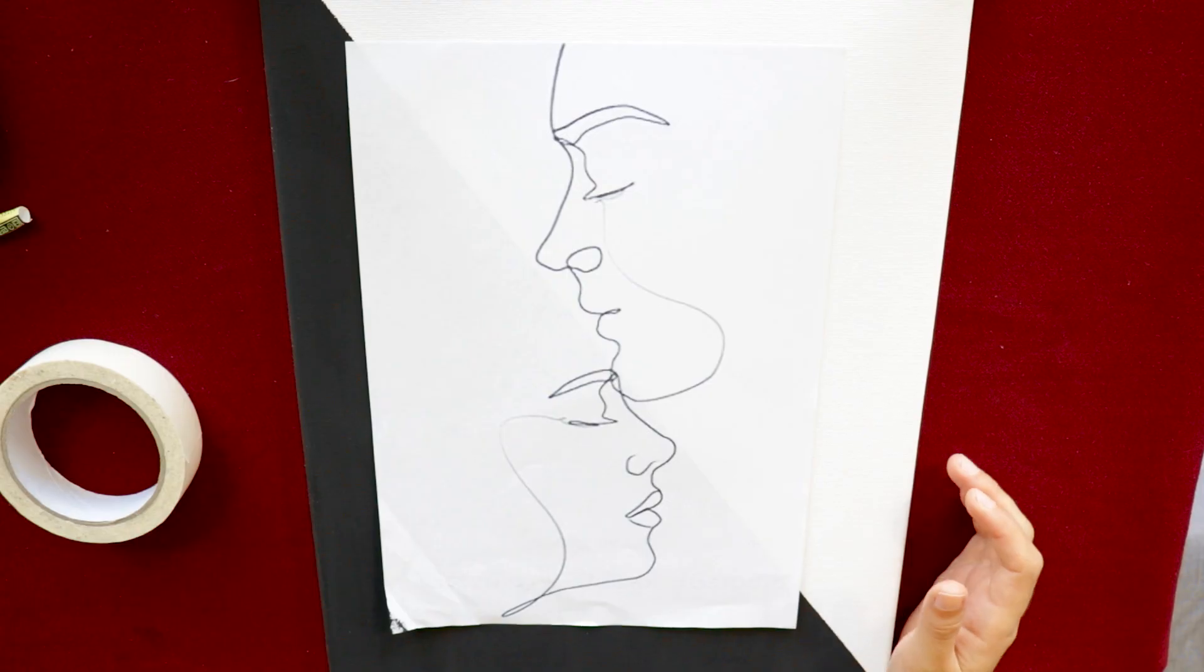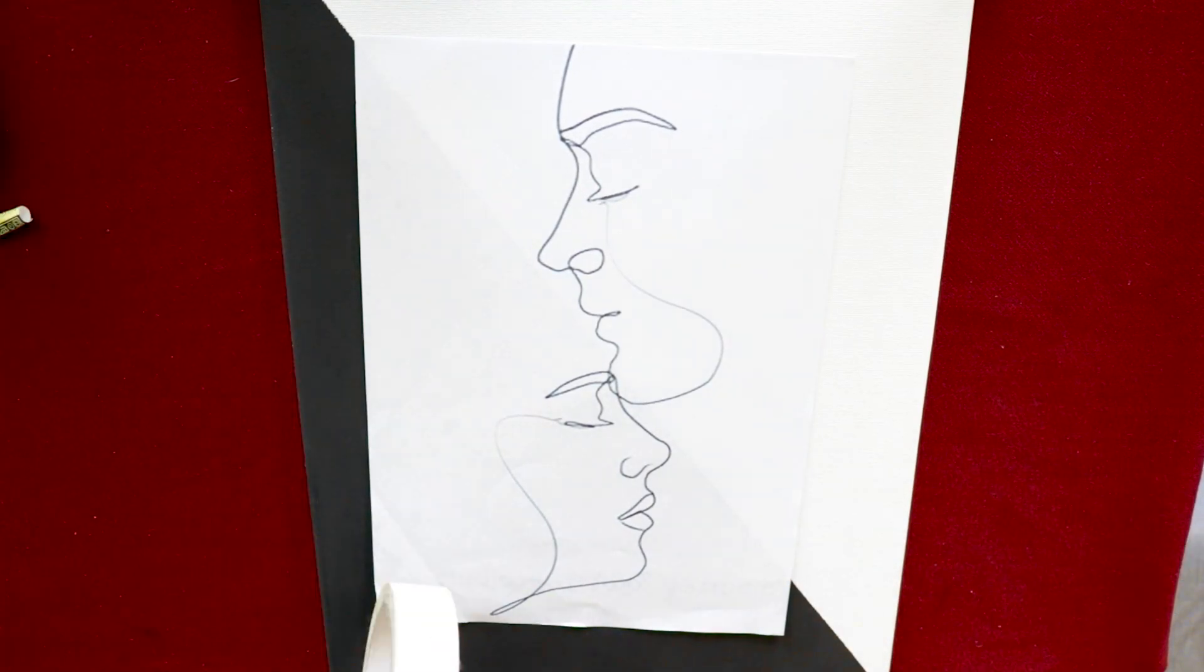So we did the painting and now we will do the sewing part. Basically you have to put your drawing on top of your canvas and poke some holes with these old lines.